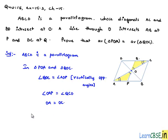Therefore, in both the triangles, two corresponding angles and a side are equal. Therefore, we can say by angle-side-angle property of congruency, triangle POA is congruent to triangle QOC. When two triangles are congruent, then their areas will be equal. Therefore, area of triangle POA is equal to area of triangle QOC.